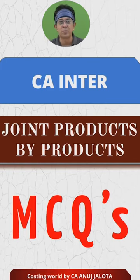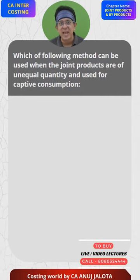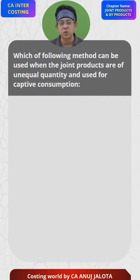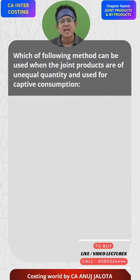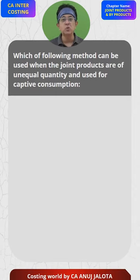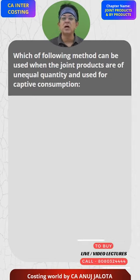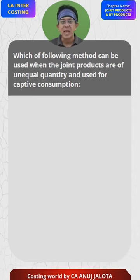CA inter joint products and by-products MCQs. Which of the following methods can be used when the joint products are of unequal quantity and used for captive consumption? Captive consumption means internal consumption — one department produces something but it is not sold in the market; it is transferred directly to another department, which uses it for some purpose.